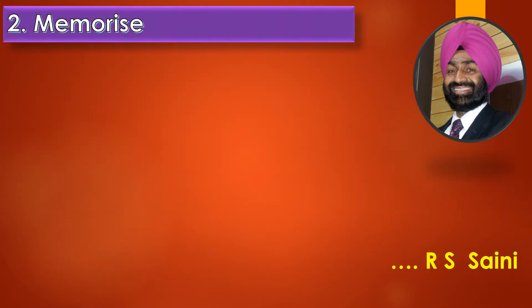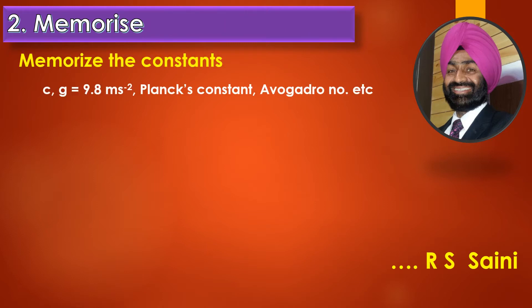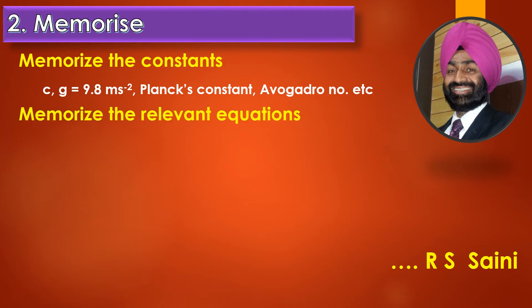You must memorize some important constants such as the velocity of light, 3×10⁸ m/s, the value of g as 9.8 m/s², Planck's constant if possible — though it is given in most questions — as well as Avogadro's number. Some relevant equations used repeatedly in numericals must also be kept in mind: v = u + at, F = ma, kinetic energy = ½mv², potential energy = mgh. These must be memorized so you can write them immediately when required.